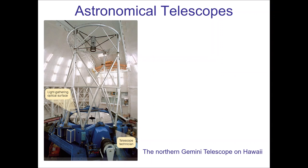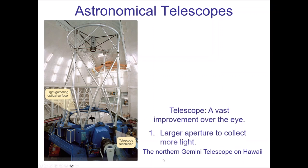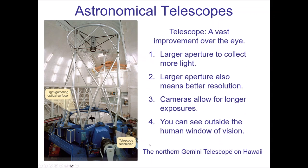The first telescope was created for astronomical purposes by Galileo in early 1610, and he used a very simple refracting telescope that utilizes a lens to collect light. The picture here shows where we've come in all these years — this is a very large reflecting telescope. You can see a mirror at the bottom measuring about eight meters in diameter. The telescope acts as basically a gigantic improvement over what the eye is capable of doing.